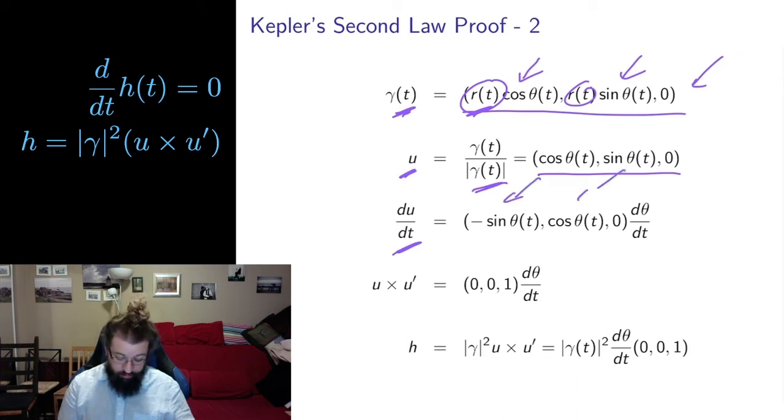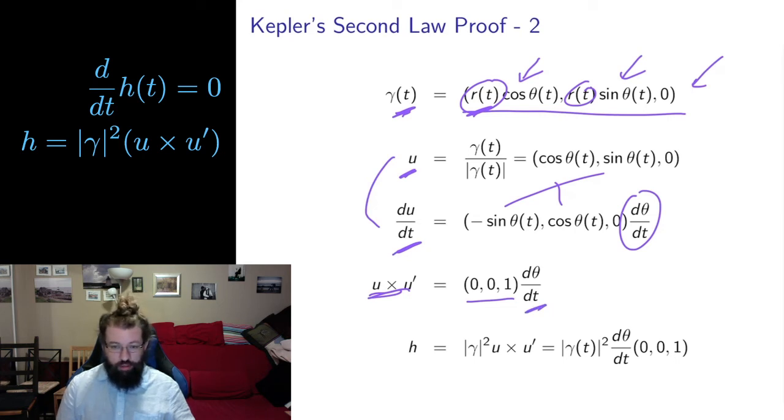Then if I take the derivative of this unit vector, derivative of cosine is negative sine, derivative of sine is cosine, this is zero. And using the chain rule, since I don't know how theta depends on t, I have to multiply this all by the derivative of the inside dθ/dt. Finally, if I take the cross product of these two things, this times this in the cross product is zero, this times this is zero. And the third term of the cross product is cos²θ plus sin²θ which equals one. So I get a very nice cross product. And then I multiply by this scalar dθ/dt, which is multiplied by the second vector. Scalars work well with cross products. And then I can use the lemma that says h is |γ|² u times u'. So that's |γ|² u times u' was just equal to this. So I put that here. So I get this whole scalar times the direction (0,0,1).